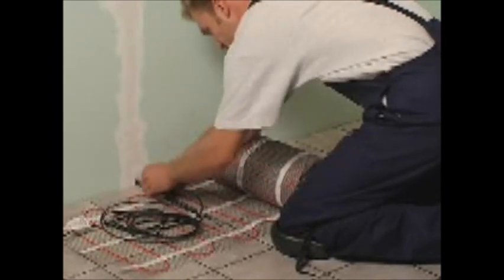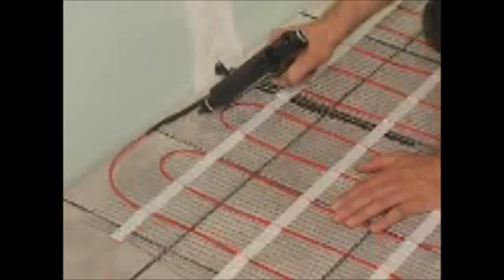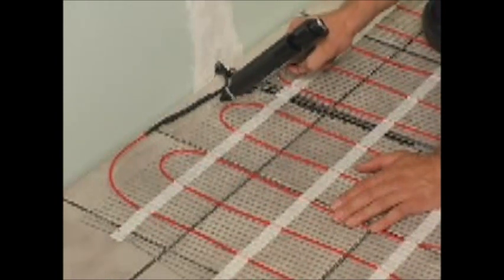The cold tail from the end of the mat is led to the junction box through the conduit in the wall. Fasten it with hot melt glue.